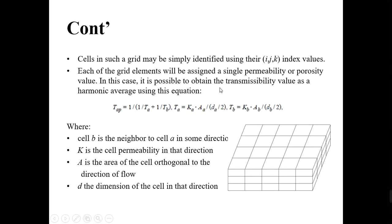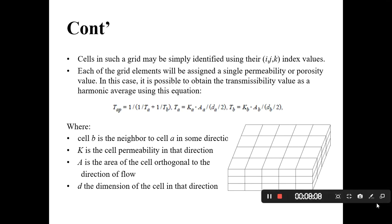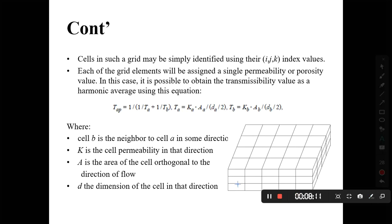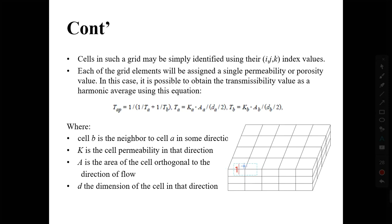Each grid block has an address. We define it by I, J, K. For example, the first one here is (1,1), this one is (1,2), this one is (1,3). In three dimensions, for example, this one is (1,1,1). We can set properties based on their addresses and then carry out our simulation.